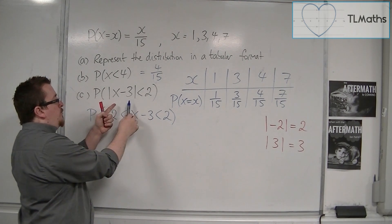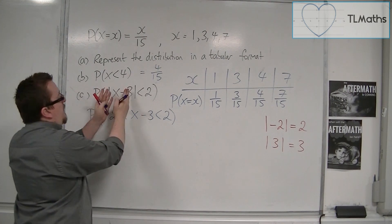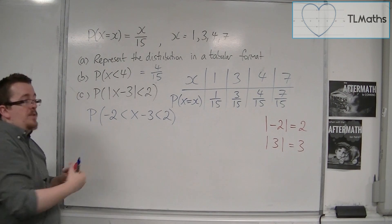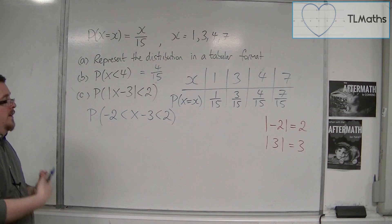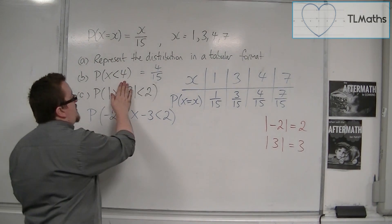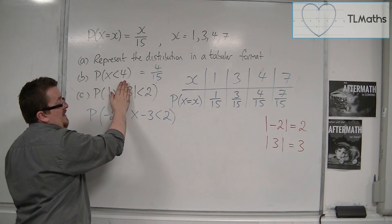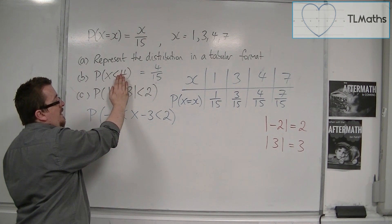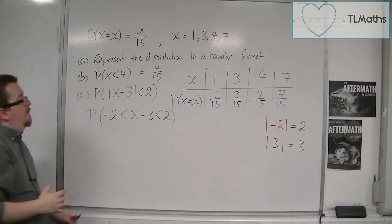So x minus 3 is just a number, so that any number that is less than 2 has to be larger than minus 2, but less than positive 2. So for example, if this number was 0.1, it would be less than 2. If it was minus 0.1, it would be less than 2. If it was minus 1.98, it would be less than 2, because your modulus sign makes it that positive number.